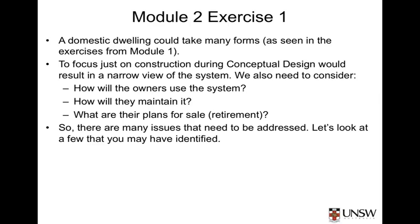Secondly, what maintenance issues need to be considered? For example, if access is required to the roof space, how large is that access and where is it located? If access is required to air conditioning units, where is that access required and what is needed to access it — does it need a ladder, how much space is needed, and so on.